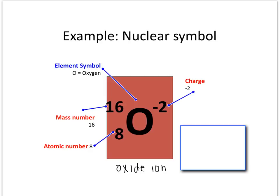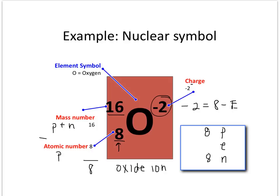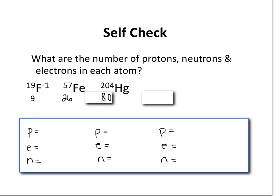Let's take a look at an example — this is the oxide ion. You can see that it has a mass number of 16, which represents the protons and neutrons in the nucleus, an atomic number of 8, which is the number of protons, and a charge of negative 2. If you were to calculate the protons, electrons, and neutrons: there are 8 protons from the atomic number; subtracting the atomic number from the mass number gives us 8 neutrons; and using our formula, negative 2 equals 8 minus E, we find that there are 10 electrons in this ion.